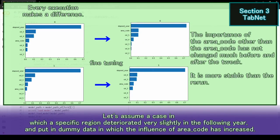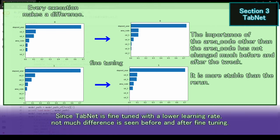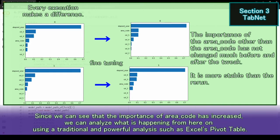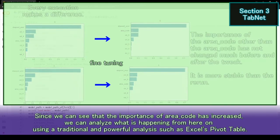Let's assume a case in which a specific region deteriorated very slightly in the following year, and put in dummy data in which the influence of area code has increased. Since TabNet is fine-tuned with the neural learning rate, not much difference is seen before and after fine-tuning. Since we can see that the importance of area code has increased, we can analyze what is happening from here on using a traditional and powerful analysis such as Excel's pivot table.